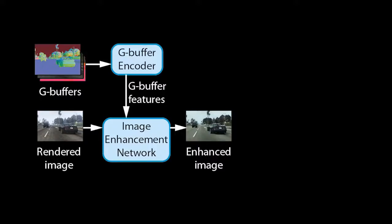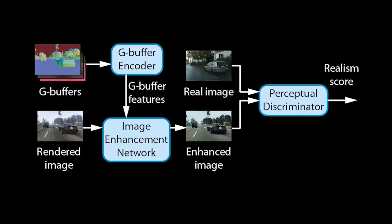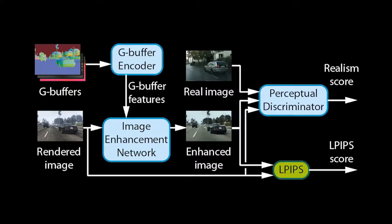To train our networks for enhancing realism, we employ a perceptual discriminator. For each image it takes in, it produces a realism score. To make it understand what the real world looks like, we also feed it real photos. To ensure that our networks retain the structure of rendered images, we further add them to the discriminator inputs and employ a perceptual loss.